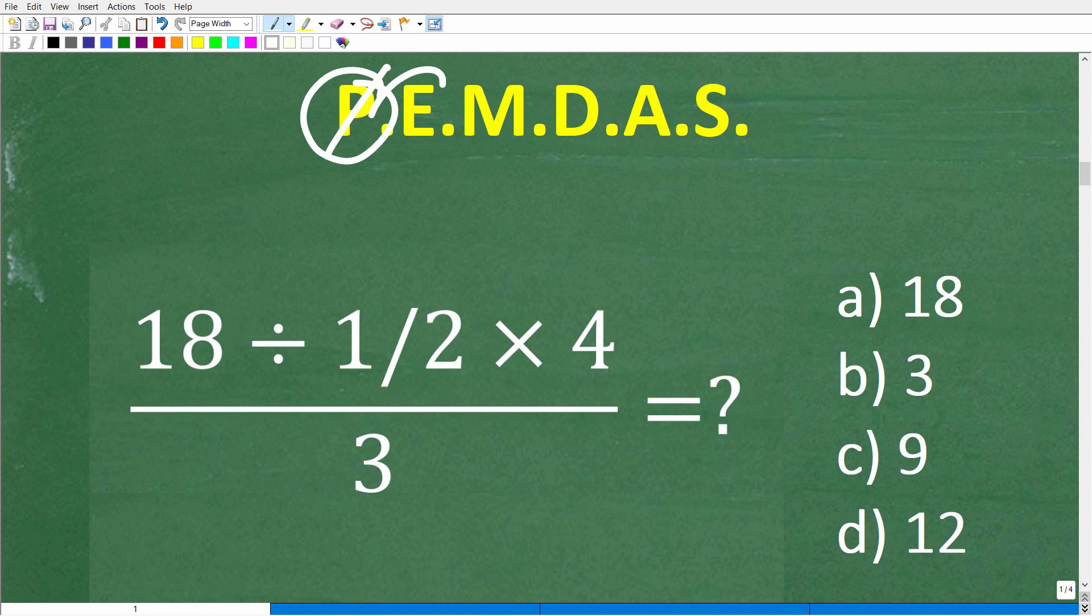All right, so there are no parentheses. Are there any powers, any powers and exponents? No, I do not see any. So we're good with that. So is there any multiplication and division? Yes, there is, right? So we have division right here. Okay, so that's our D. And we have multiplication right here.